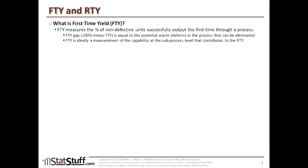First-time yield is ideally a measurement of the capability at the sub-process level that contributes and rolls up to the rolled throughput yield, which we'll get to in just a second. To adequately measure the first-time yield, we have to have a clear definition of what a defect is and how to measure those defects. Those things must be predetermined before we can have a true measurement of what the first-time yield is.